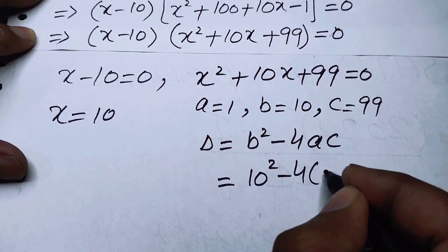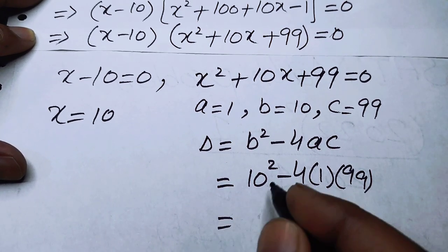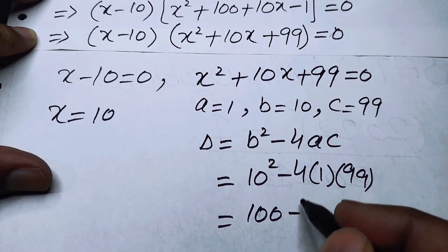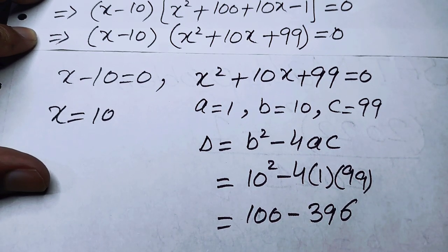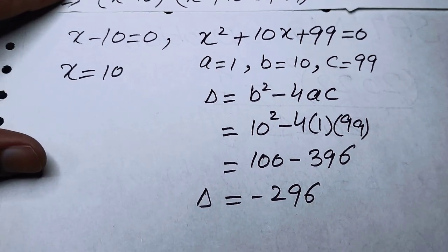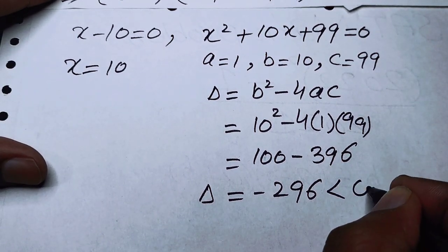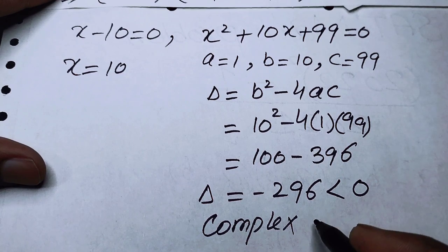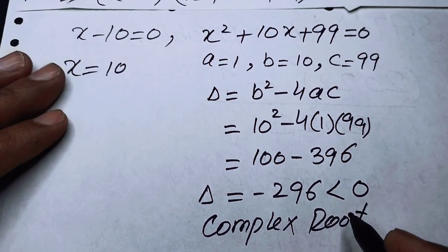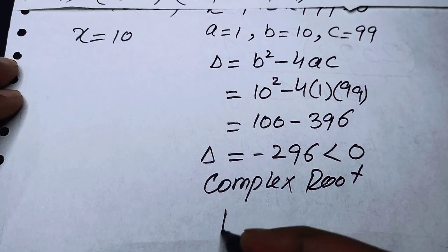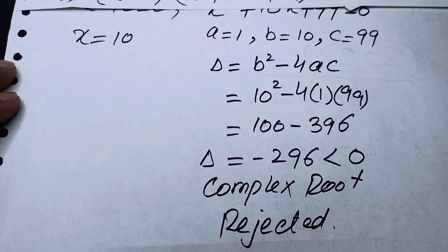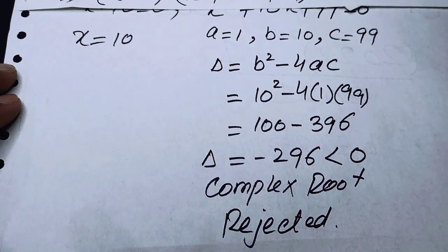This gives 100 minus 396 equals minus 296. Since delta is less than 0, the quadratic equation has complex roots. Because we need only real roots, we reject these complex roots.